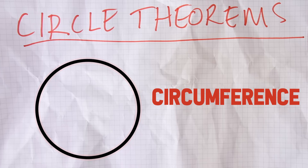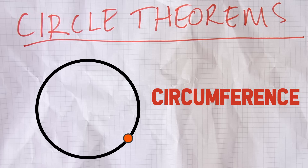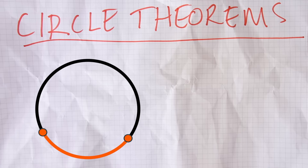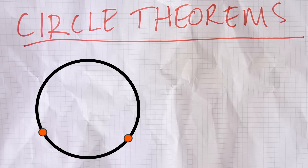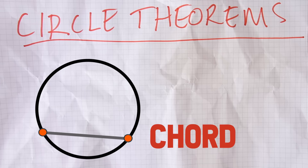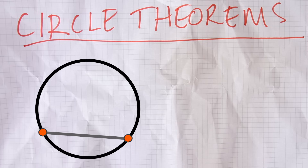Imagine you have two points on the circumference of a circle. The highlighted part connecting those two points is an arc - so an arc is just a part of the circumference of a circle. Now you could join those two points up to create what is called a chord. So a chord is just a line between two points on the circumference of the circle. And that chord splits the circle into two, and we call each of those parts segments.